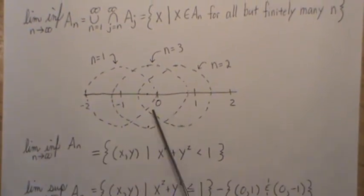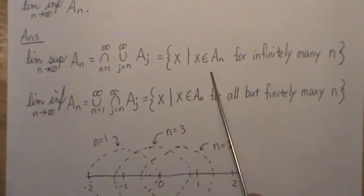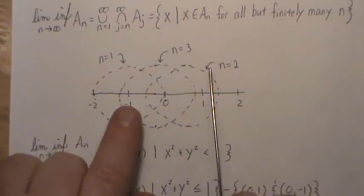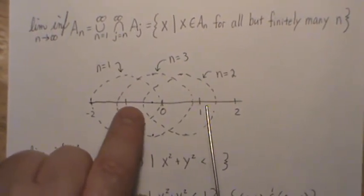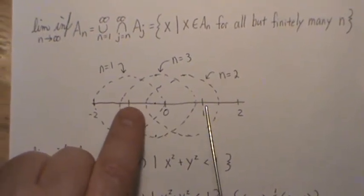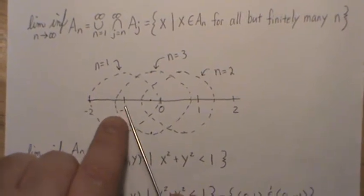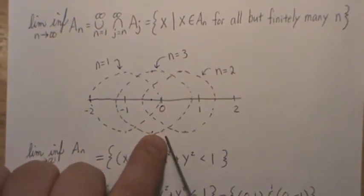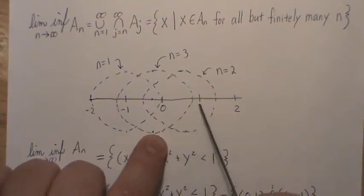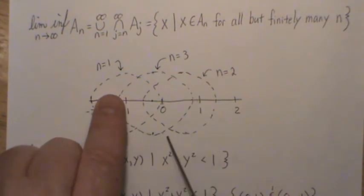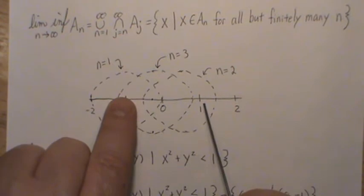Now for the limit supremum, we need x to be in infinitely many of the Aₙ. As we go back and forth — one step we're at center -1/n, the next at +1/n — this repeats forever, so points on or near the boundary appear in infinitely many circles. In fact, the whole boundary is visited infinitely many times, except for the points (0, -1) and (0, 1), because those exact points are never actually inside any of the slightly shifted circles.